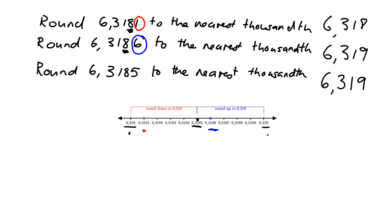To summarize: whenever you're rounding, you always look at the digit just to the right of where you're rounding to. If it's 5 or bigger, you round up. If it's less than 5, you round down.